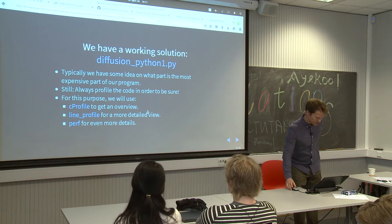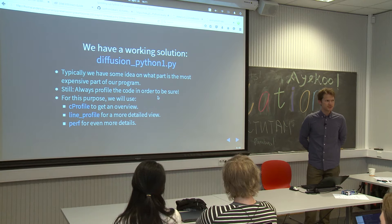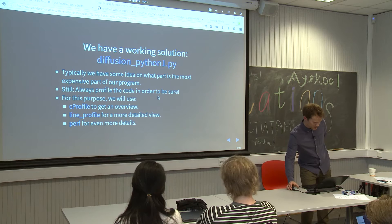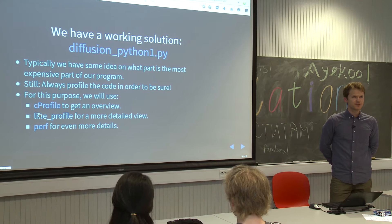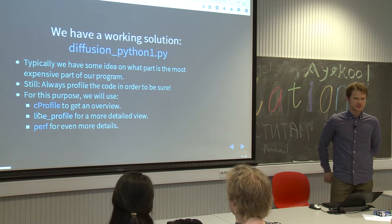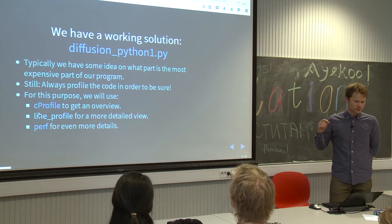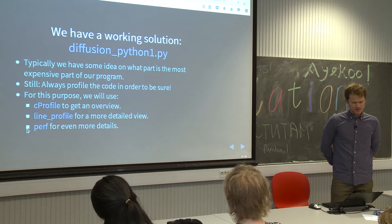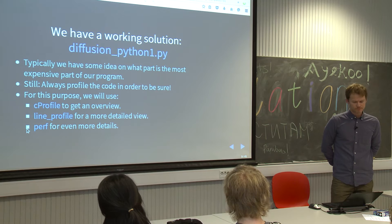I'm thinking we'll look at three different tools for doing that. One is called cProfile — it's more useful if you have a big program and you want to know exactly what function is slow; it gives a certain overview. Then we have line profiler, which gives you more details of a function — it will tell you the cost of each line. The idea is to use cProfile to figure out what function is slow and then line profiler to figure out what part of that function is slow. There's another tool called Perf, which is more general — not just for Python — and gives you some more metrics about your program and why it might be slow.